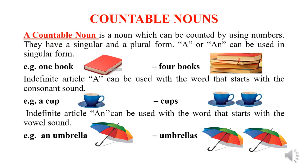Let's begin with the countable nouns. A countable noun is a noun which can be counted by using numbers. For example, one book, four books. They have a singular and a plural form. A or an can be used in singular form. Indefinite article A can be used with a word that starts with the consonant sound.